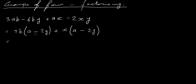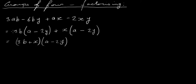What you should notice now is that what's inside the bracket here is exactly the same as what's inside the bracket here - that's what you're looking for. If the contents of both brackets are different, you've done something wrong or need to rearrange how you paired the terms. In this case we're fine - we have (a minus 2y) in both brackets. So we take 3b and plus x together to get (3b + x), and combine with (a minus 2y). We're factorizing again, taking (a minus 2y) out of both terms, leaving (3b + x).